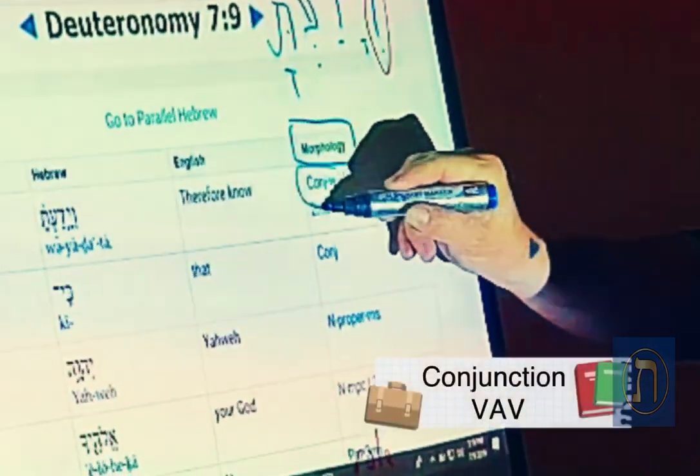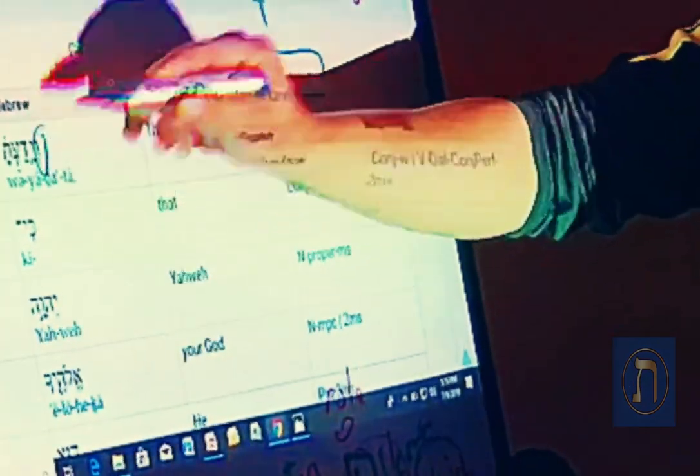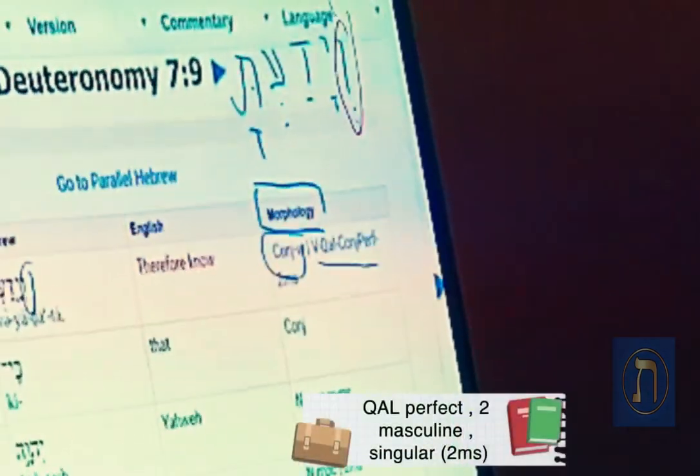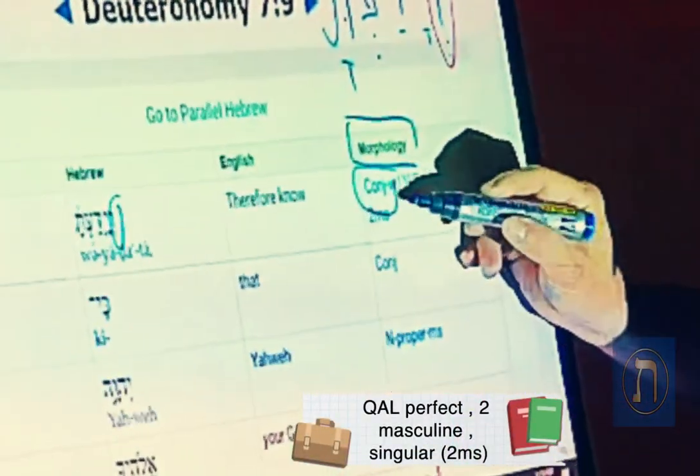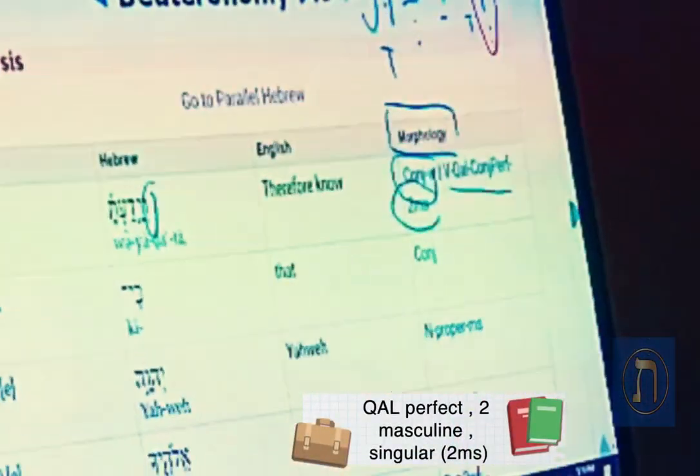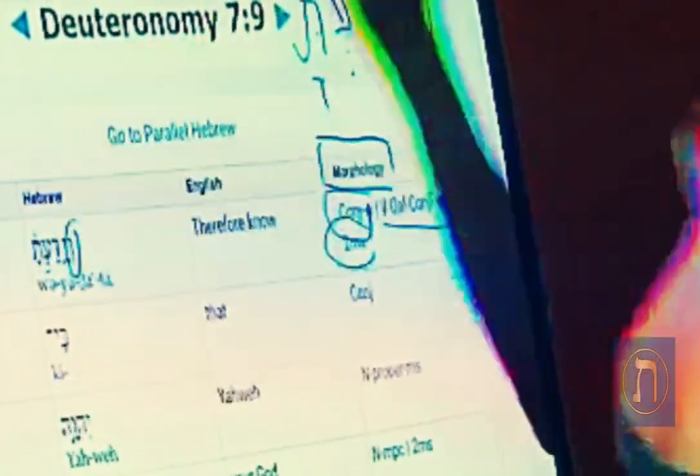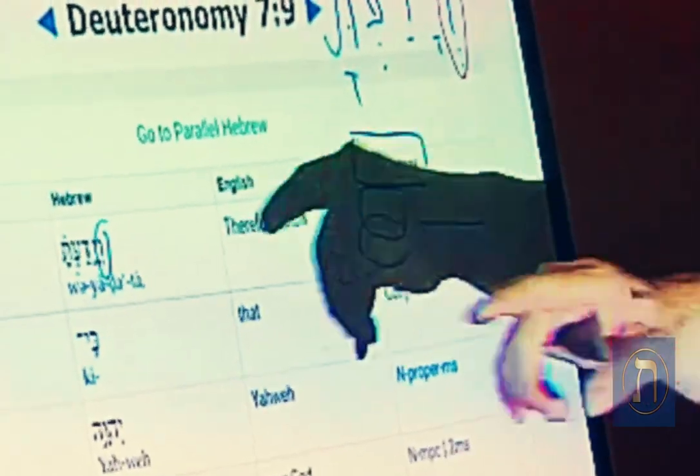You have a conjunction vav, which is your vav here, and you have a kaal perfect which is yadda. And that is in the second masculine singular, so second masculine singular will appear as this. So that's how you pronounce it, weyadatah.